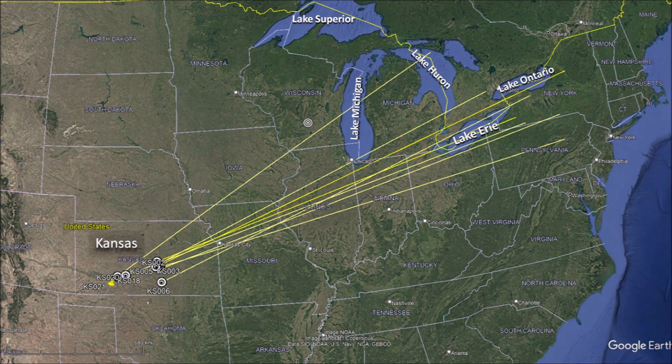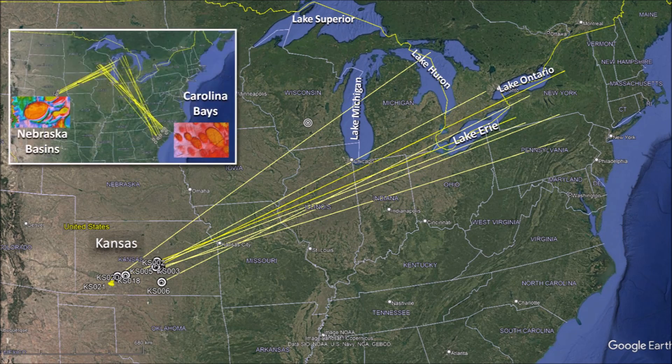This image shows great circle trajectories for the azimuths of the Kansas basins that were fitted with ellipses. The orientation suggests that the ice boulders that made these basins originated from Lake Erie. This is a surprising result and there are several problems. The first problem is that the Nebraska basins and the Carolina basins converge by Lake Michigan. If the orientations of the Kansas basins are correct, then we have to conclude that there must have been at least two extraterrestrial impacts — one by Lake Michigan and another one by Lake Erie.